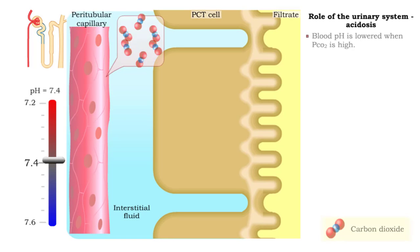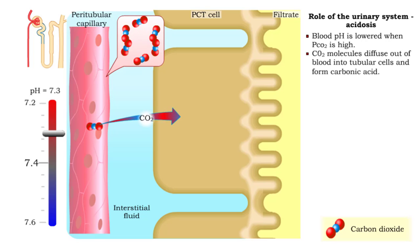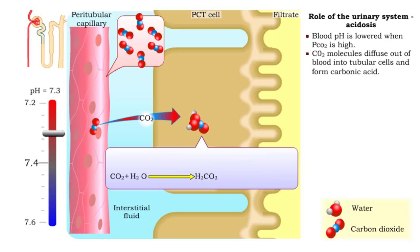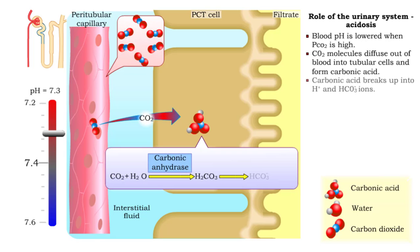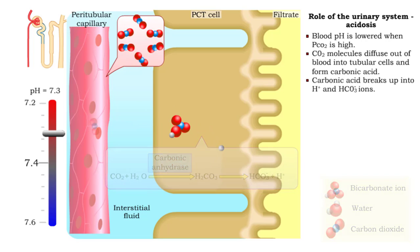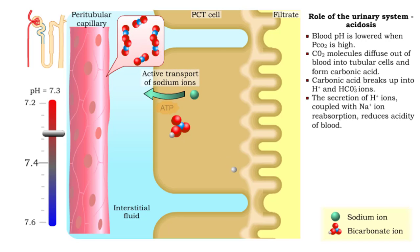Blood pH is lowered when the partial pressure of carbon dioxide is high. Carbon dioxide molecules diffuse out of the blood into tubular cells and form carbonic acid. Carbonic acid breaks up into hydrogen and bicarbonate ions. The secretion of hydrogen ions,